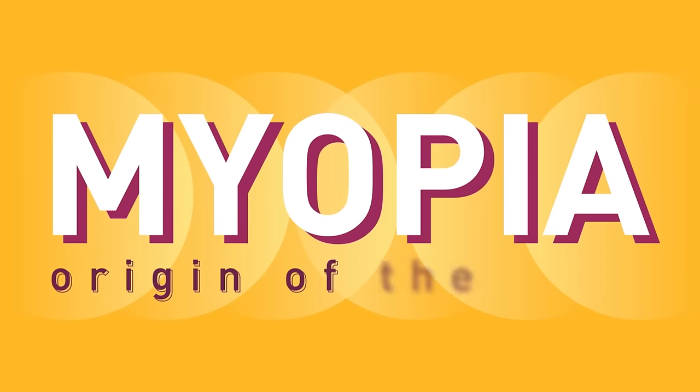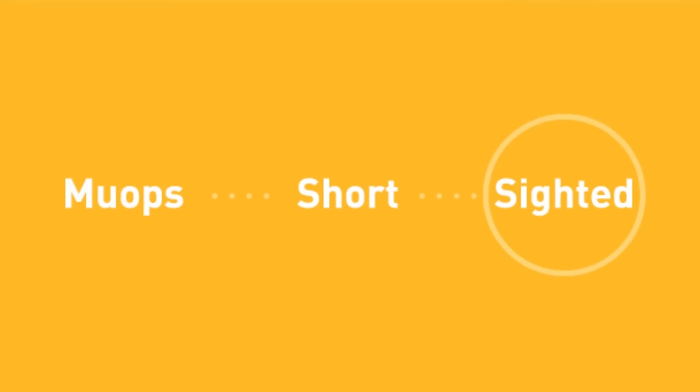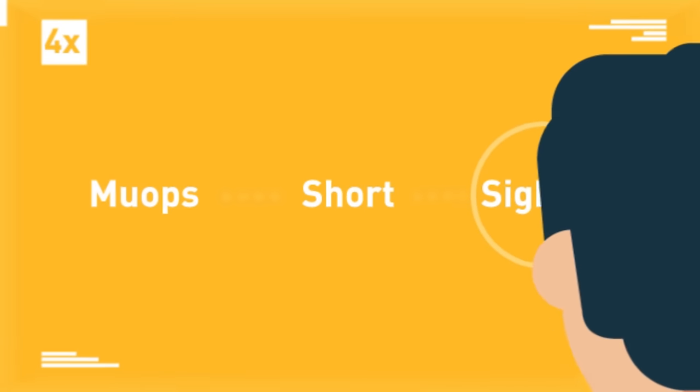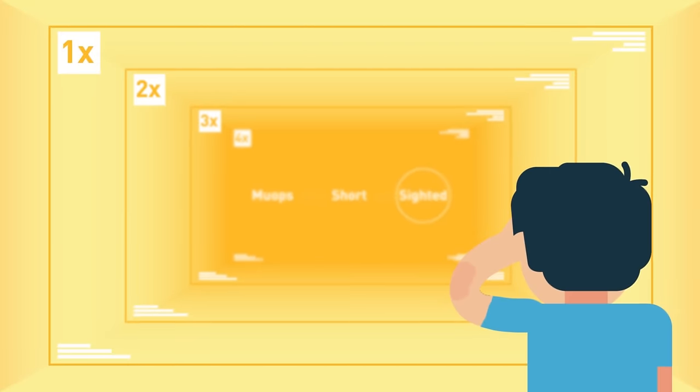Myopia — origin of the word. It comes from the Greek word 'myops' meaning short-sighted. These people cannot see distant objects clearly.